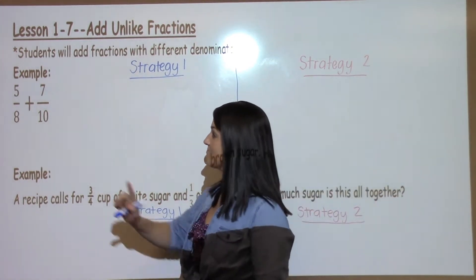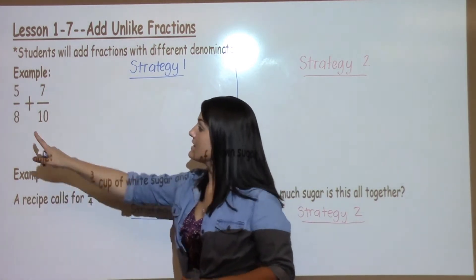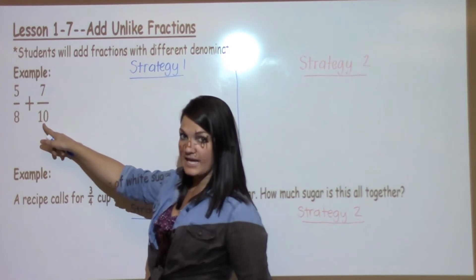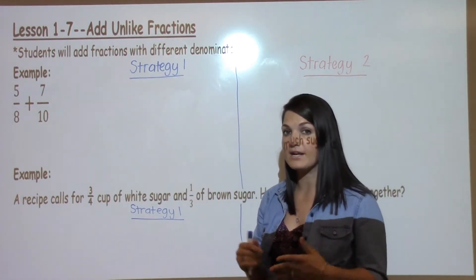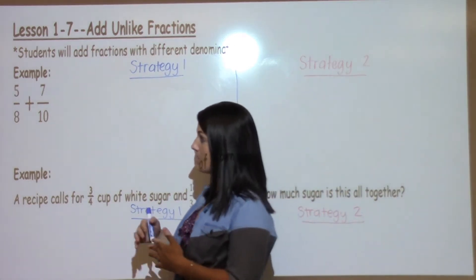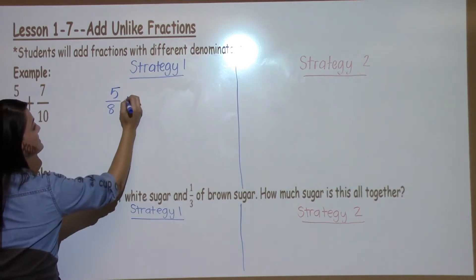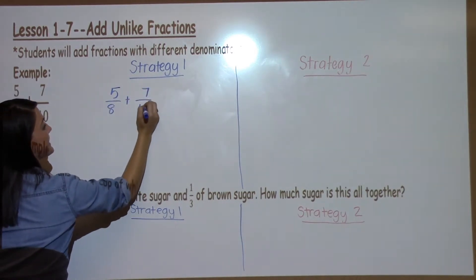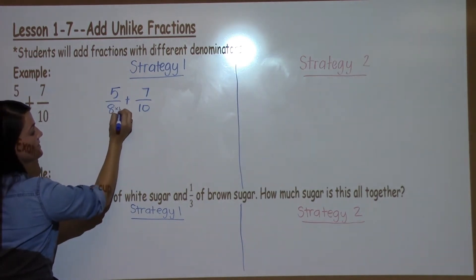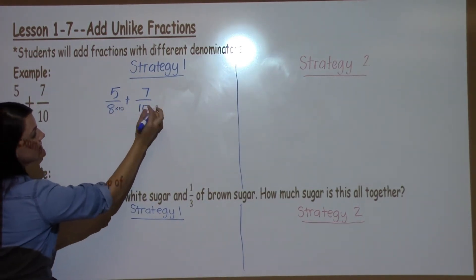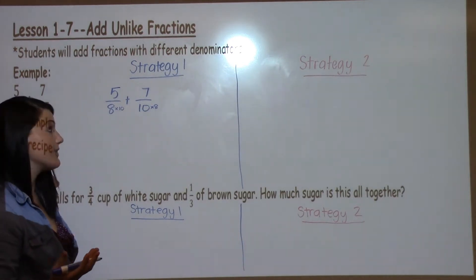Let's start with strategy one. The first example is 5/8 plus 7/10. These denominators are not the same. So one strategy is to multiply the denominators by each other in order to make them the same. So 5/8 plus 7/10, I can take 8 times 10 and 10 times 8 to come up with the same number on the denominator.